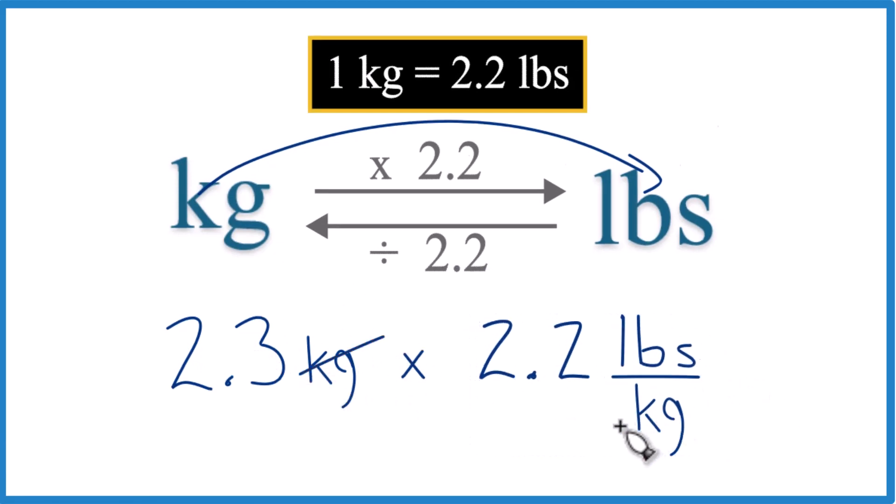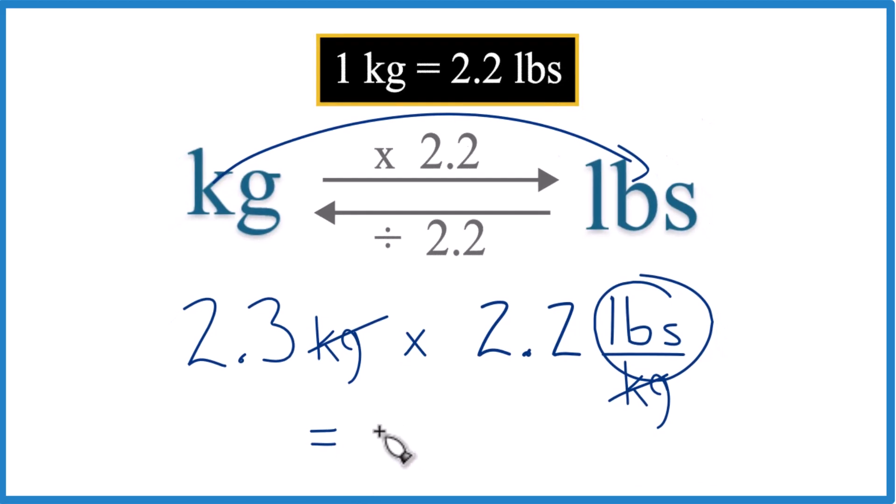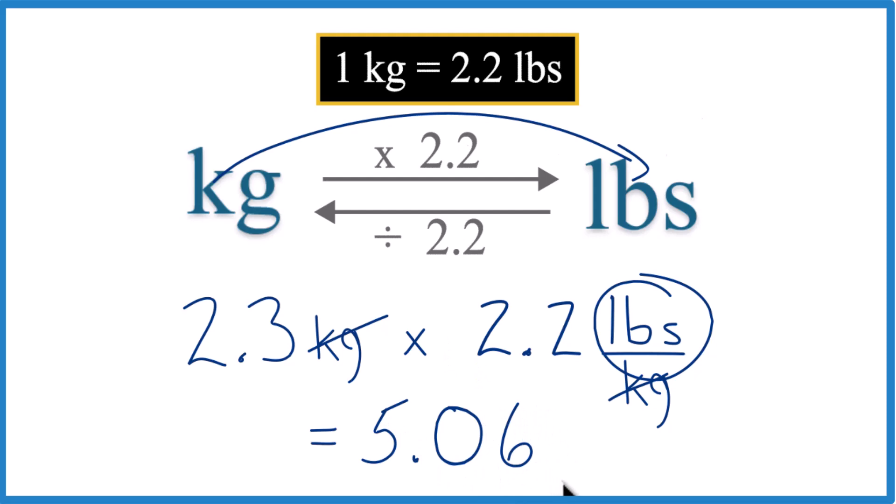Kilograms on top and the bottom, they cancel out. We're left with pounds. So 2.3 times 2.2 pounds, that equals 5.06. And let's just call it 5.1.